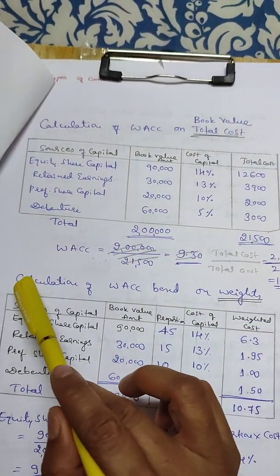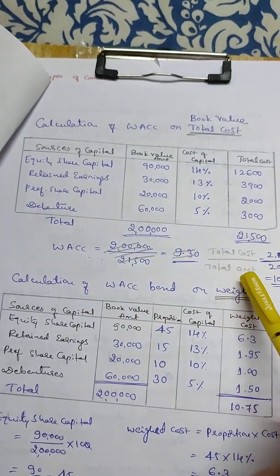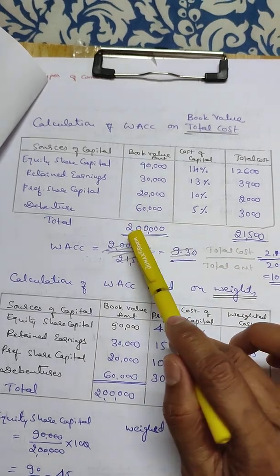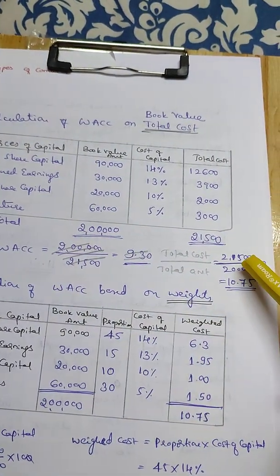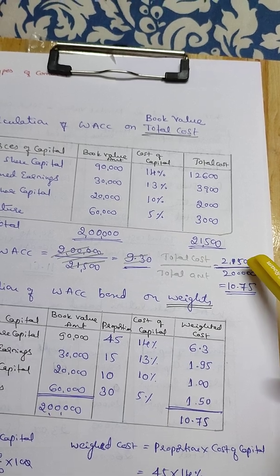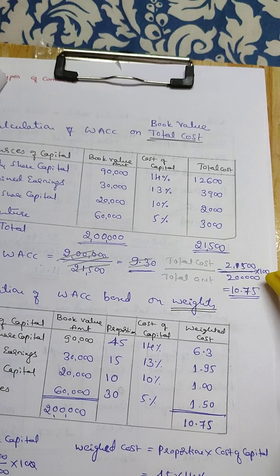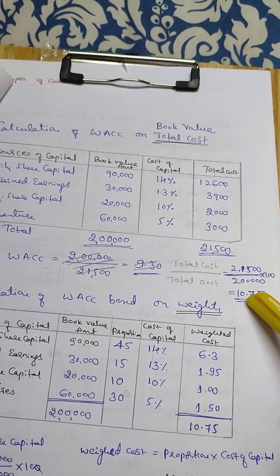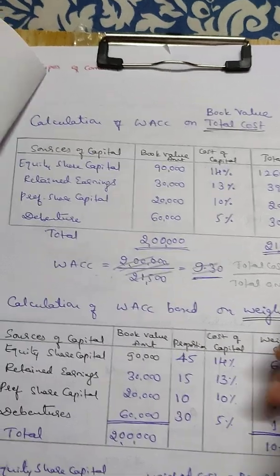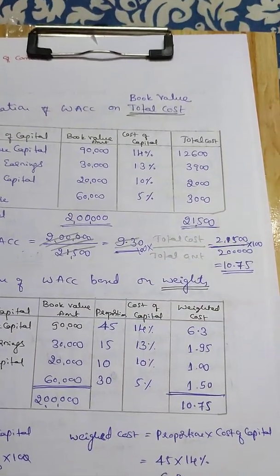The total cost comes to 21,500. The total book value amount is 2,00,000. The weighted average cost of capital is total cost divided by total amount, that is 21,500 divided by 2,00,000 into 100.